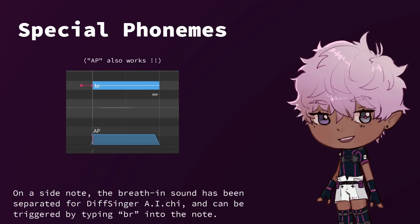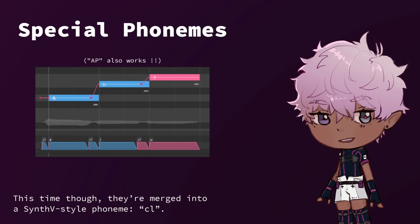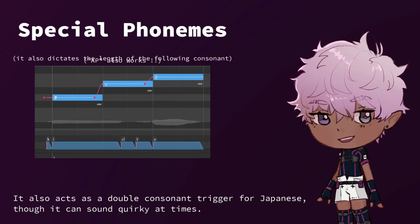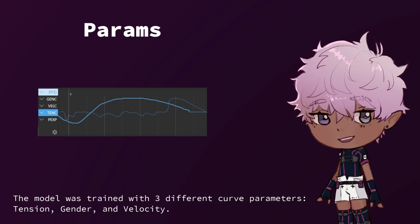On a side note, the breath sound has been separated for the singer Aichi, and can be triggered by typing BR into the note. Similar to my Enunu bank, I have glottal stops and vocal fries programmed. This time though, they're merged into a Synth V-style phoneme, CL. It also acts as a double consonant trigger for Japanese, though it can sound quirky at times.